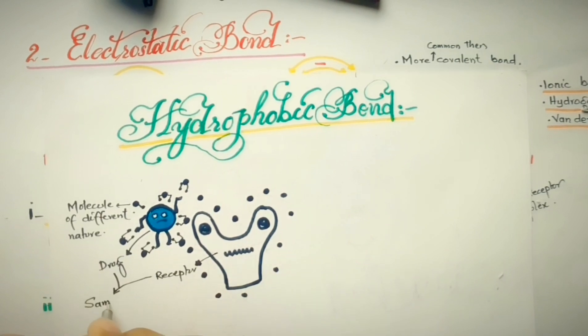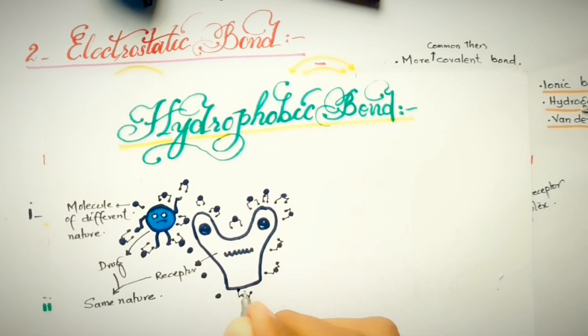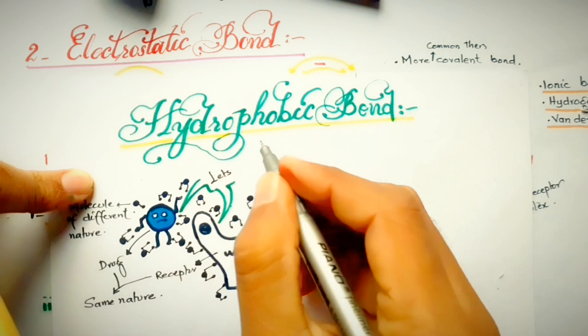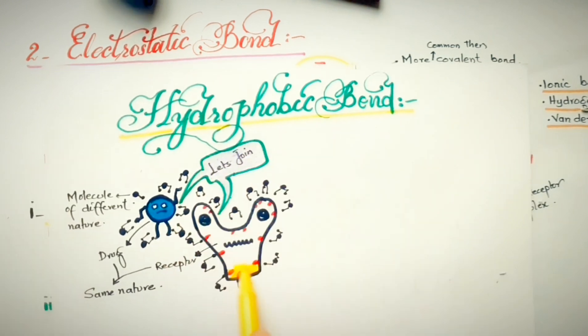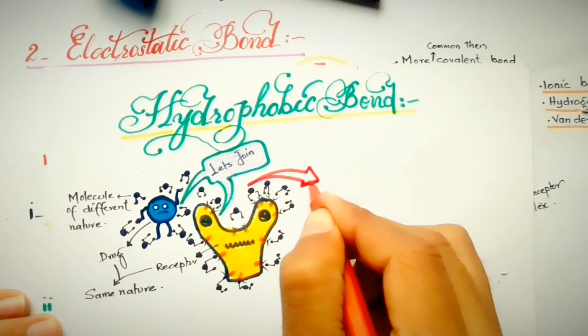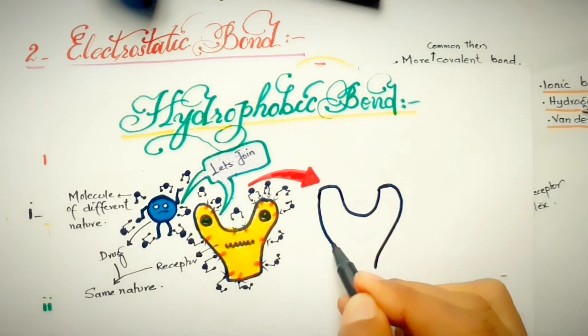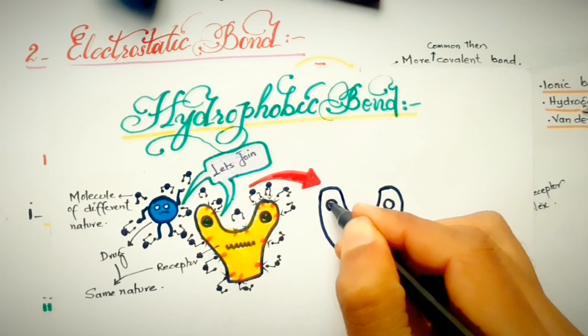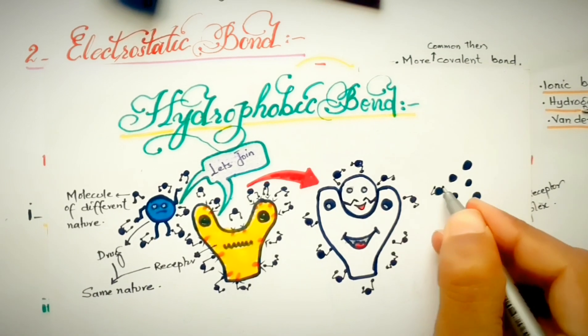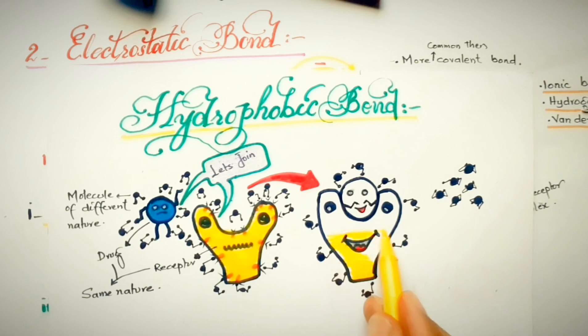And thus, in this polar system, these non-polar drug and receptors tend to come in contact with each other to have minimal contact with the polar molecules, and thus it attracts each other which bonds a bond which is known as hydrophobic bond. And these types of bonds are relatively stronger than hydrogen bonding and van der Waals forces.